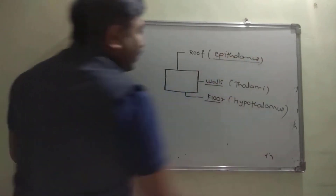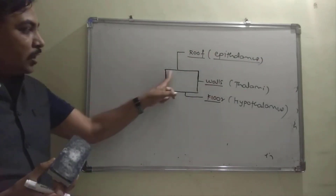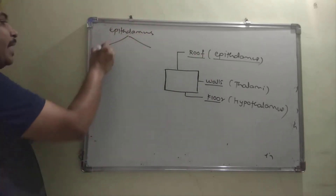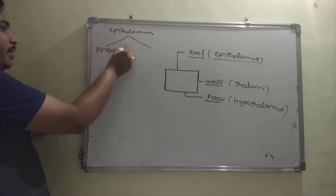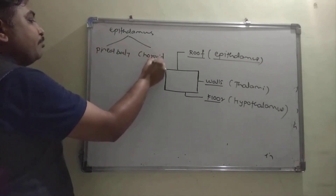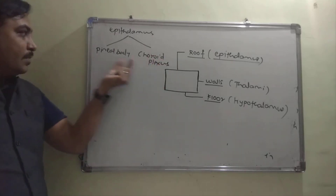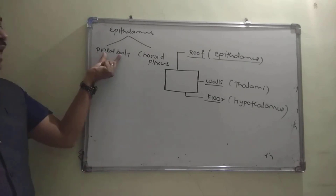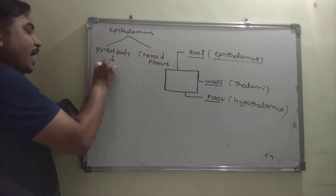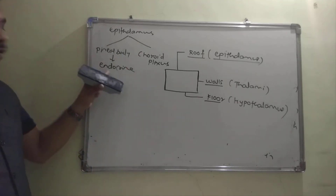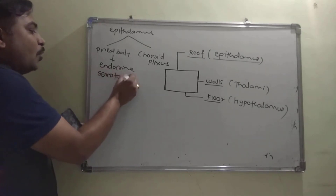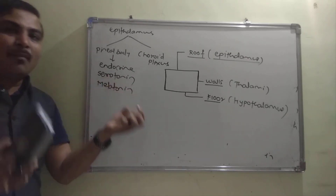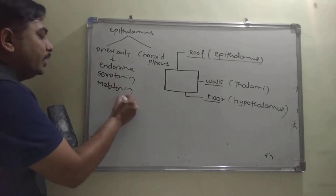The epithalamus is the roof of the diencephalon and contains two important parts: the pineal body and the choroid plexus. The pineal body was initially considered a vestigial organ, but research has shown it is functional — it acts as an endocrine gland producing two hormones: serotonin and melatonin.